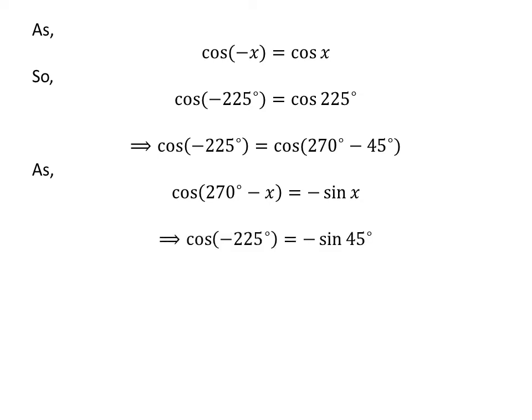Let us apply the above identity for cosine of 270 degrees minus 45 degrees. Here, x is 45 degrees. So cosine of minus 225 degrees is equal to minus sine of 45 degrees.